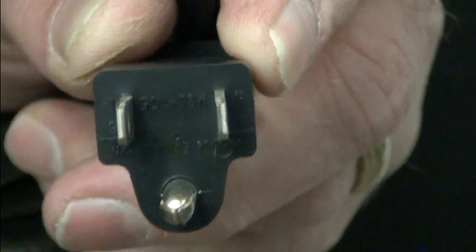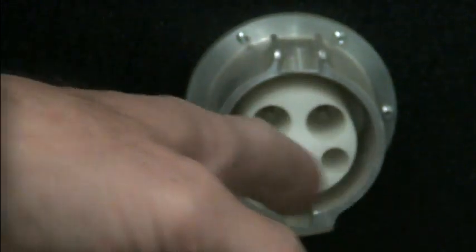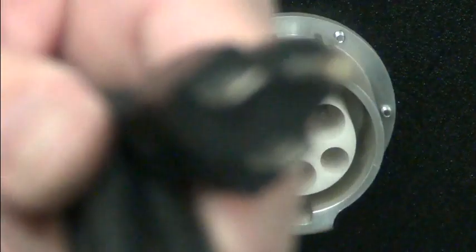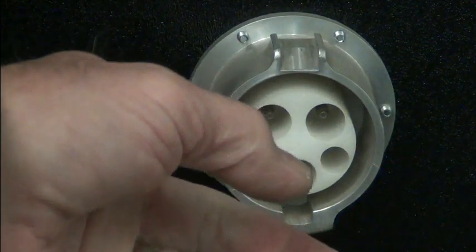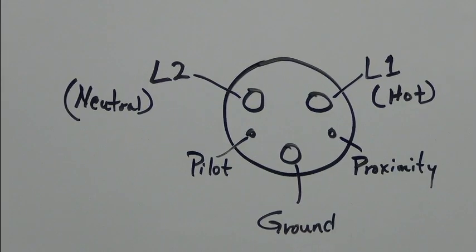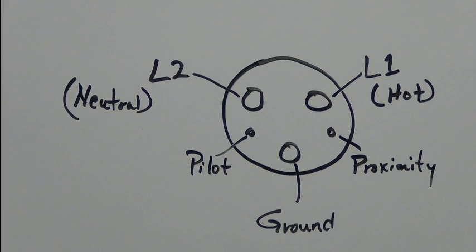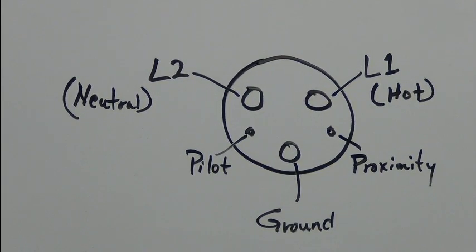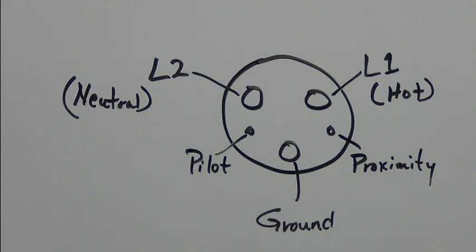So I'm bringing this up because this is a question we get as to what goes to what when we're going from this to this. Well, let me show you. So as you can see, line one will go to your hot, line two goes to neutral, and of course, ground goes to ground. It's that simple.